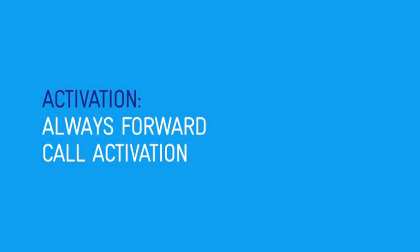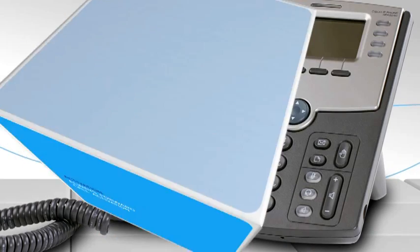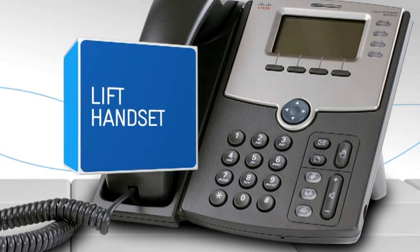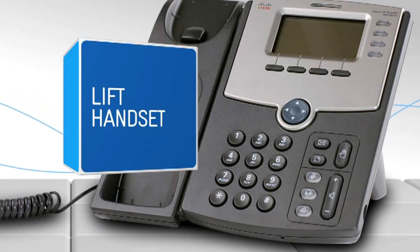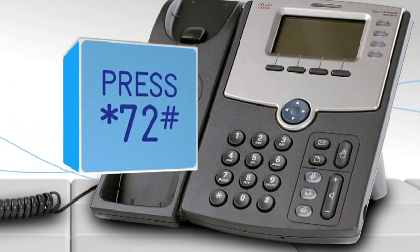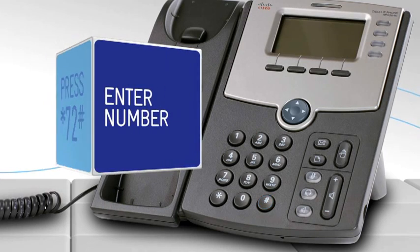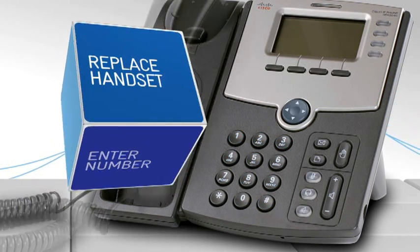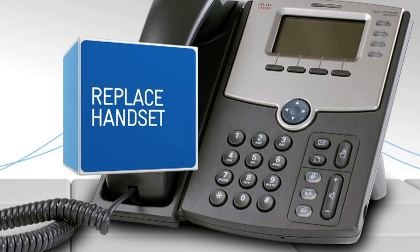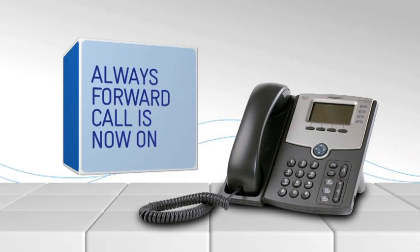Always forward call activation. To forward all your calls automatically, lift the telephone handset. Press star, seven, two, hash. Enter the number you wish calls to be forwarded to. Replace the handset. Always forward call is now on.